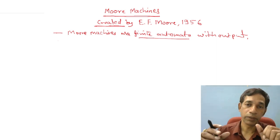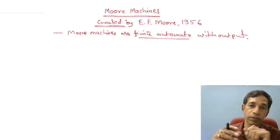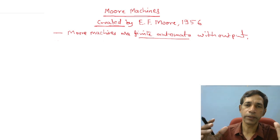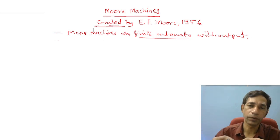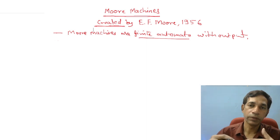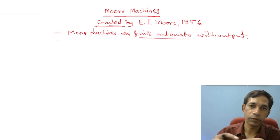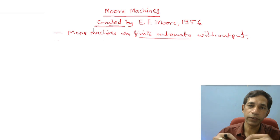One thing which is not obvious in the case of the finite automaton is the output. We can think of the whole state as the output. In the case of the Mealy machine, when you give some input string, your Mealy machine is also going to produce output — explicitly, you are going to get the output.